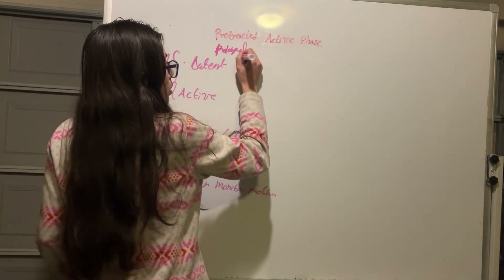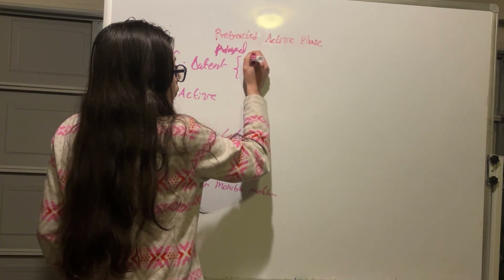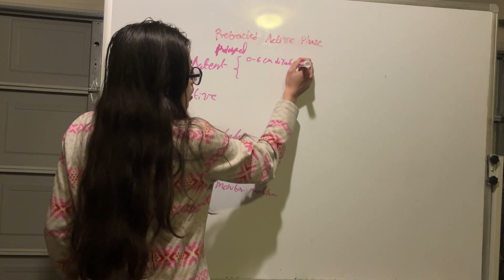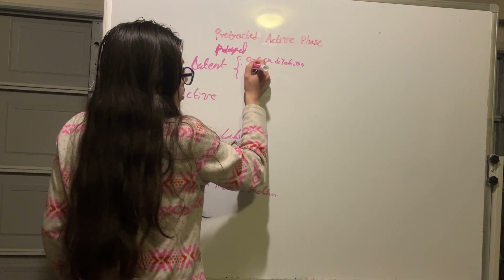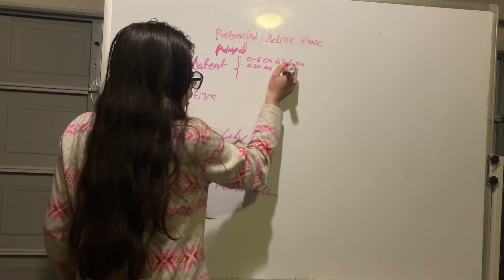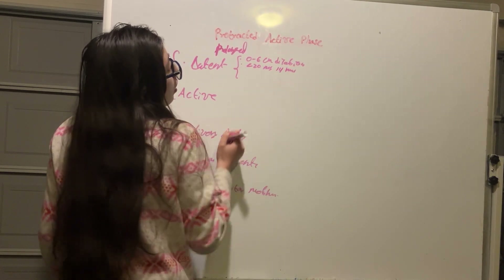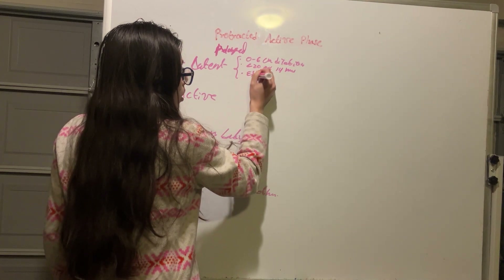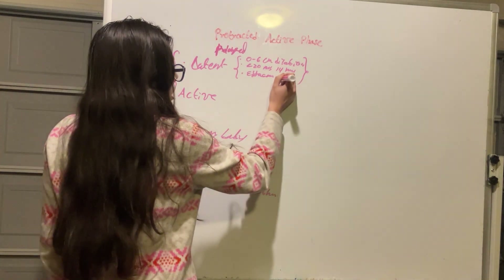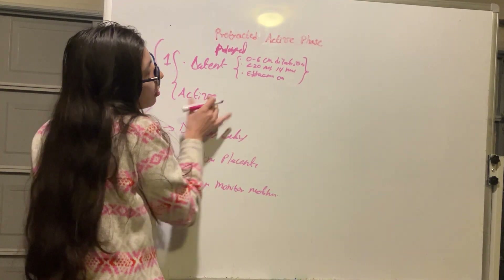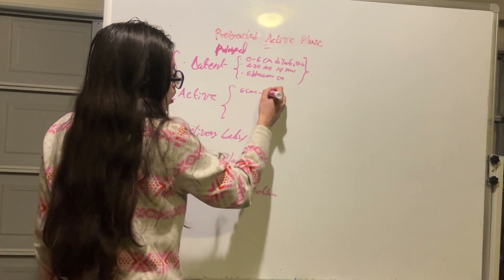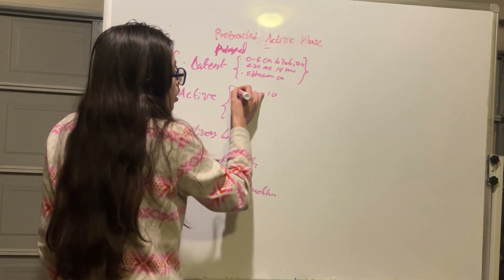Stage 1 of labor has a latent and an active phase. The latent phase starts from 0 to 6 centimeters of cervical dilation, with a duration of up to 20 hours in nulliparous women or 14 hours in multiparous women, and includes effacement of the cervix. The active phase then starts at 6 centimeters and ends at 10 centimeters dilation.